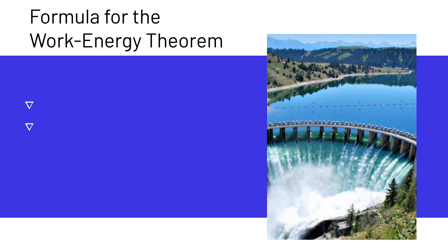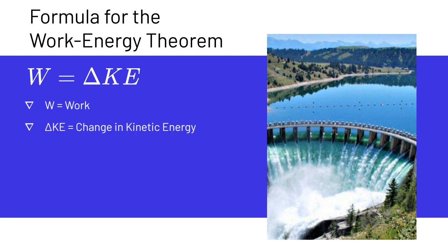So what is the mathematical formula for the Work Energy Theorem? Here we have W equals delta KE. W equals work, and delta KE equals change in kinetic energy. The delta symbol means change.